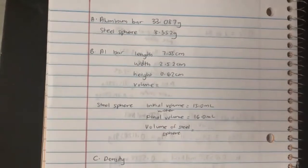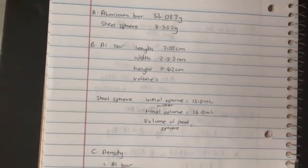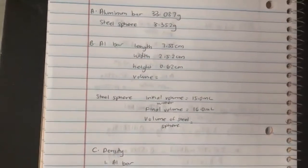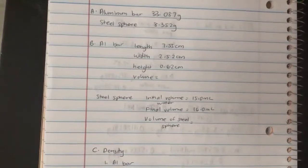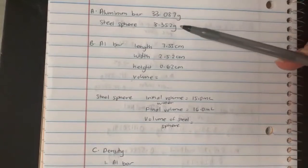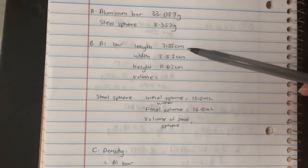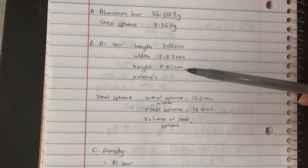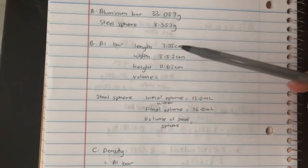Important thing here is we need to make sure to look out for sig figs. Let's take a look at our data. We have mass of aluminum bar and steel sphere, which will be used later in Part C. For Part B, we have the volumes measured using a ruler.